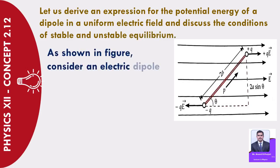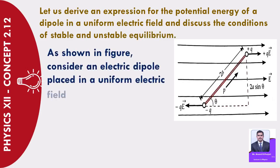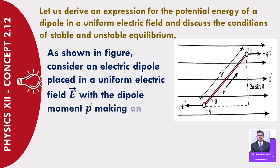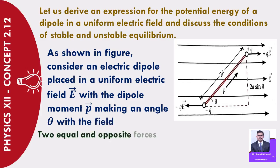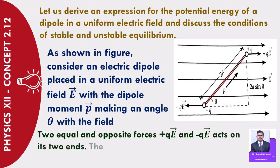As shown in the figure, consider an electric dipole placed in a uniform electric field vector E, with the dipole moment vector P making an angle theta with the field. Two equal and opposite forces, +Q·vector E and −Q·vector E, act on its two ends.